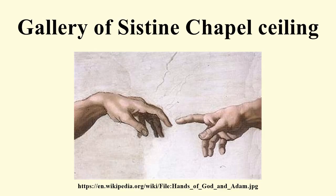The prophets depicted include Daniel, Joel, Zechariah, Jeremiah lamenting the fall of Jerusalem, Ezekiel hearing the word of the Lord, Isaiah, and Jonah. The Sibyls represented are the Cumaean Sibyl, the Erythraean Sibyl, the Persian Sibyl, the Delphic Sibyl, and the Libyan Sibyl. Additional scenes include the brazen serpent, Haman's punishment, David and Goliath, and Judith and Holofernes.